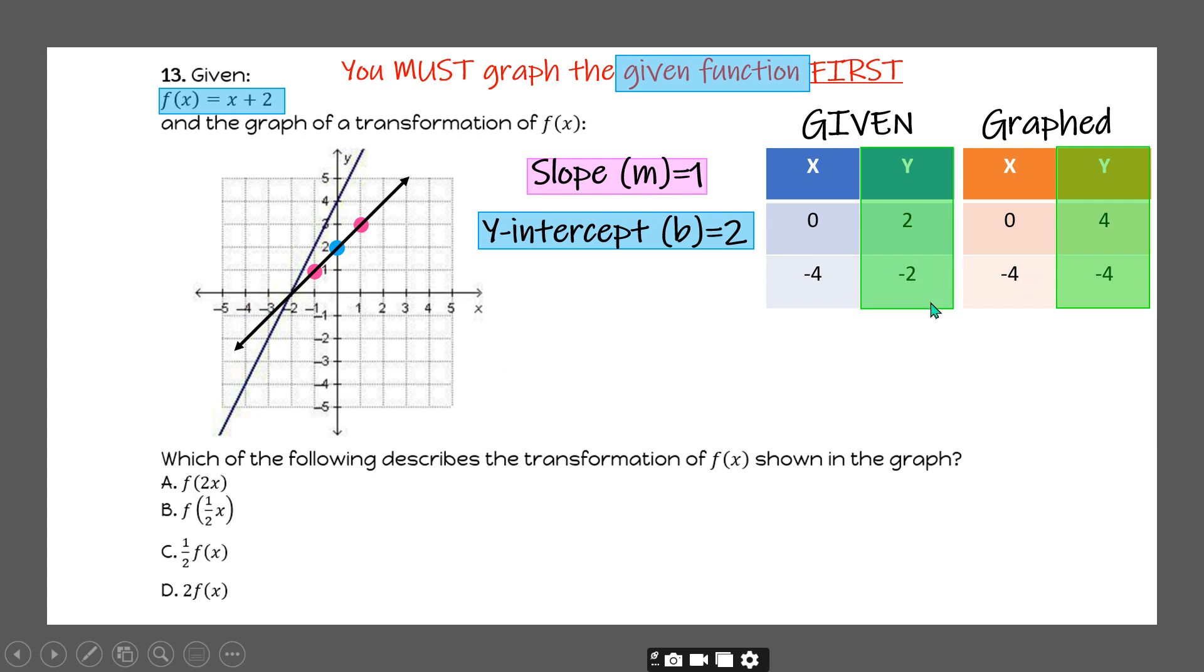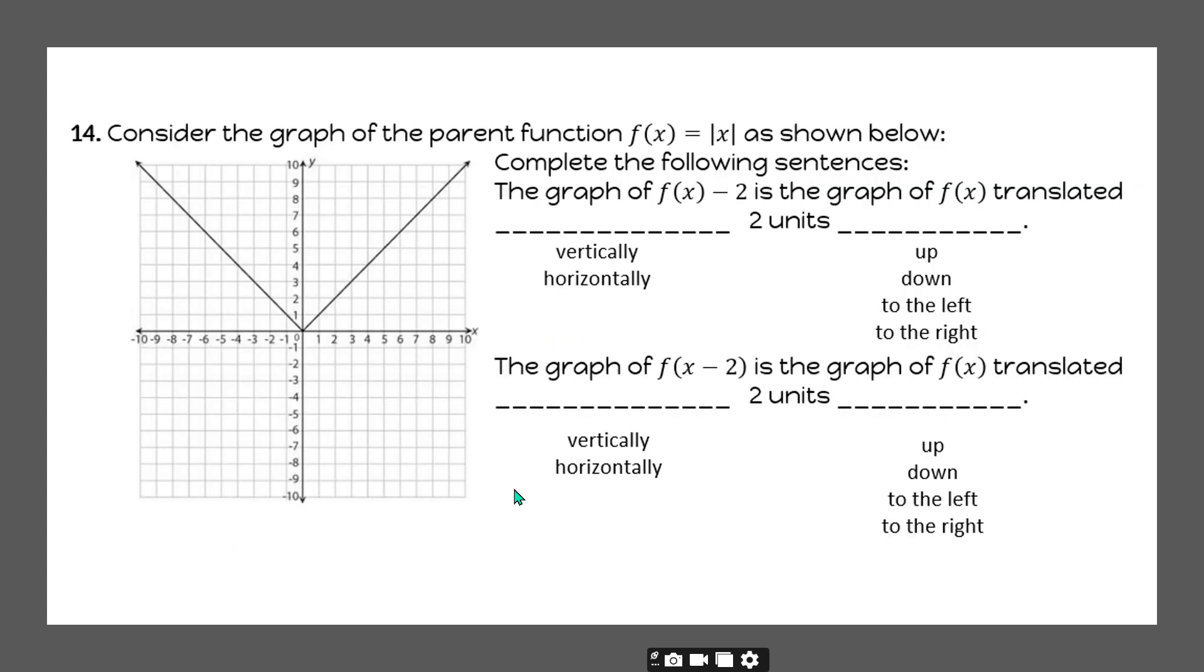So what's happening is my y-values are changing by a factor of 2. So the y's are changing by a factor of 2, and anything that's affecting my y has to be by 2, which makes sense that it would be letter D. It's not one-half of f(x) because then it would be cutting my y-values in half, and it's not inside the parentheses because my y-values are changing, not my x-values.